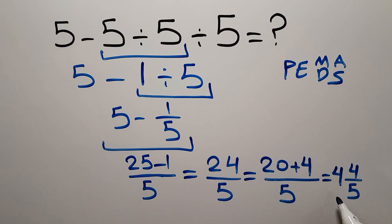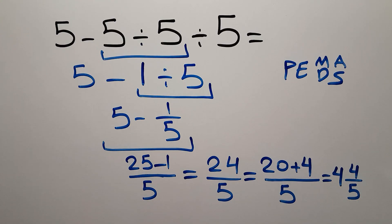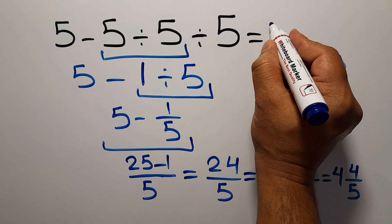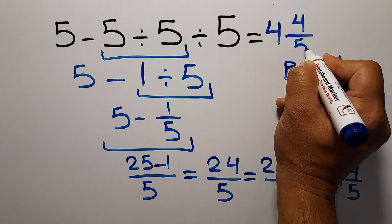That's it. Our final answer to this problem is 4 and 4 over 5. The correct answer is 4 and 4 over 5.